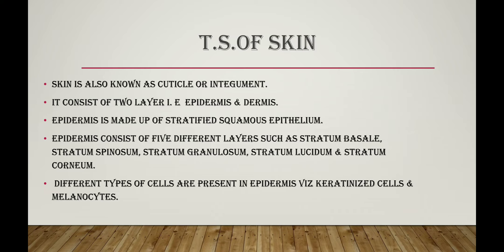The stratum corneum is the outermost layer of skin, and stratum basale is the innermost layer of the epidermis. The sequence from outside to inside is: stratum corneum, stratum lucidum, stratum granulosum, stratum spinosum, and stratum basale. The epidermis contains different types of cells — keratinized cells and melanocytes. The melanocytes secrete melanin, which is responsible for pigmentation.